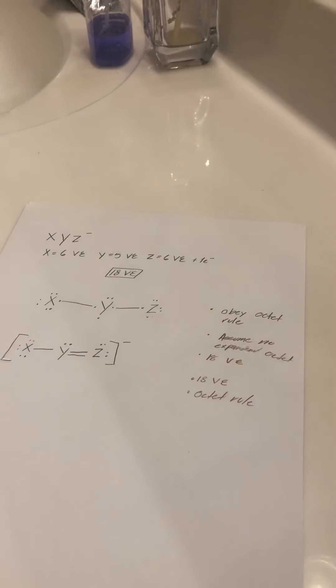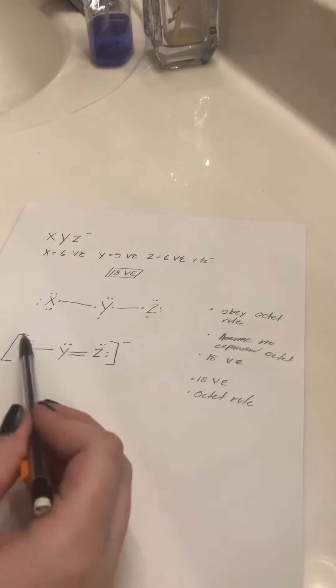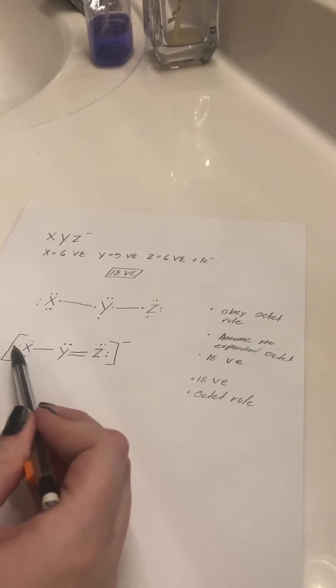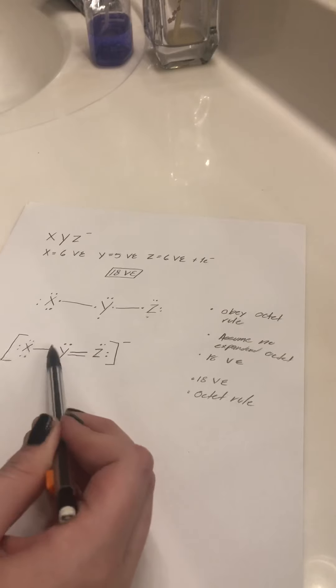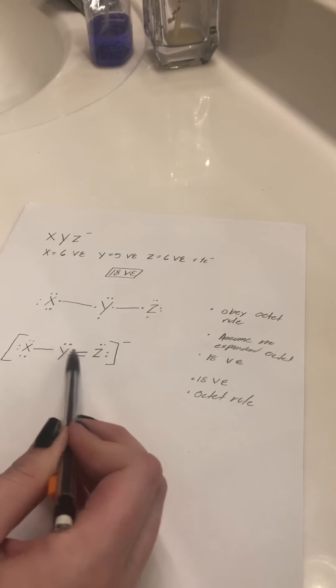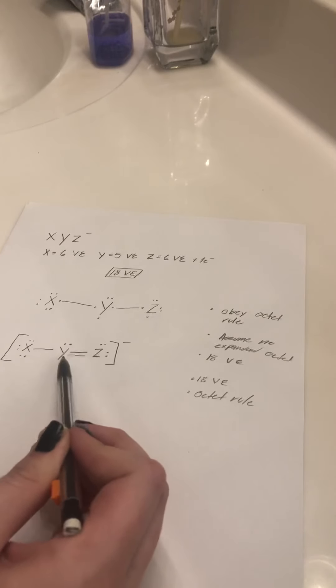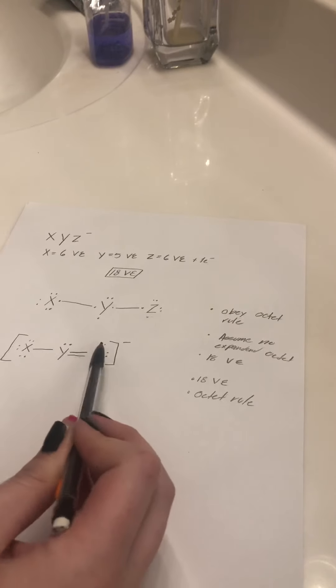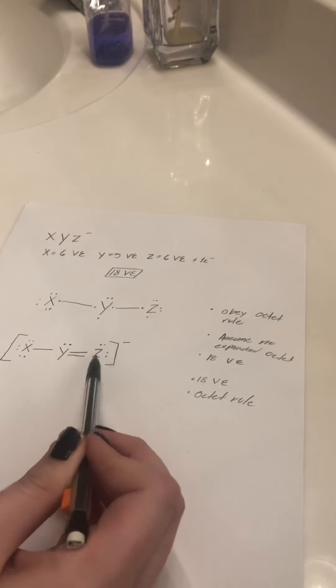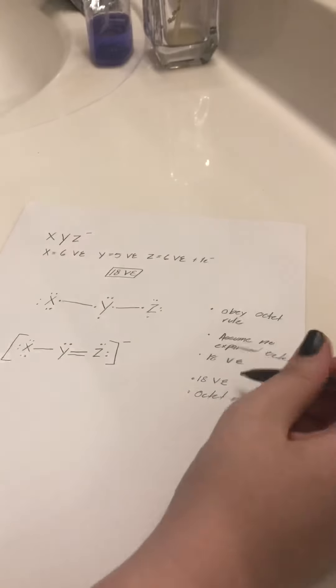Let's count and make sure that we have all of our rules met: 18 valence electrons and obeying the octet rule. Counting the electrons gives us 18 — check. And each atom has 8 electrons around it, obeying the octet rule.